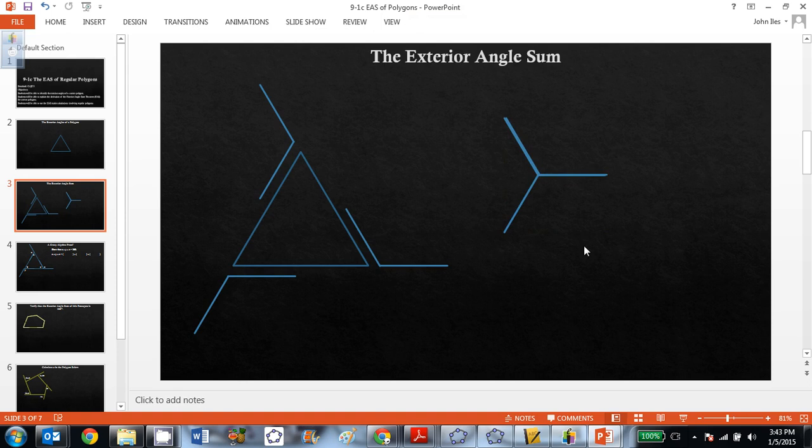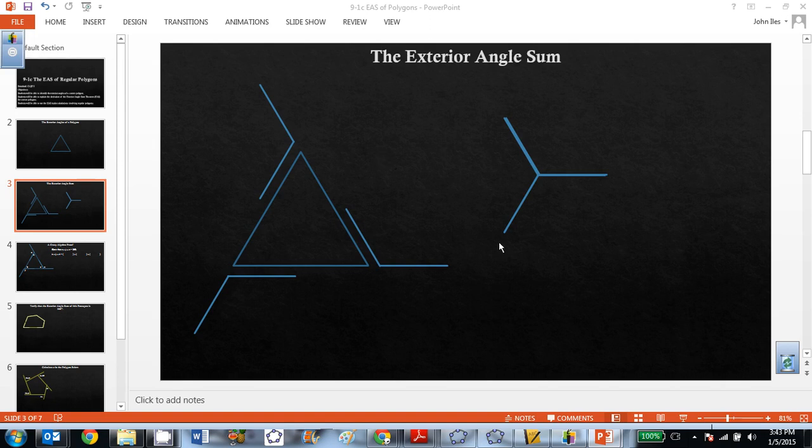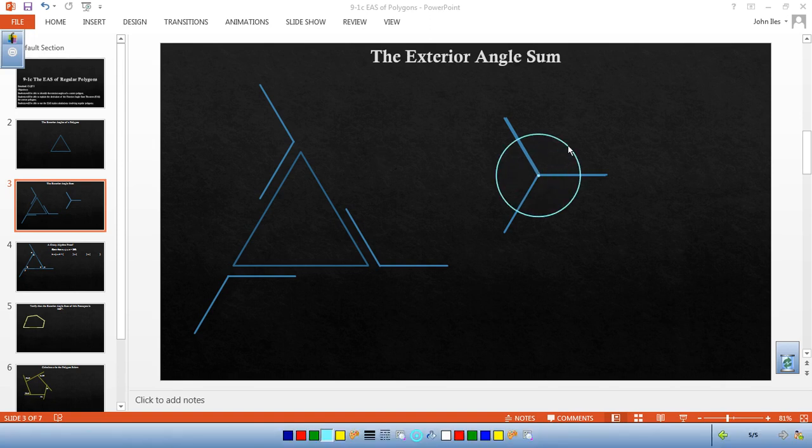When we look at this shape, you should be seeing a circular kind of deal. You've got a total of 360 degrees here. So if I were to add these three angles up, it does appear to be 360 degrees.